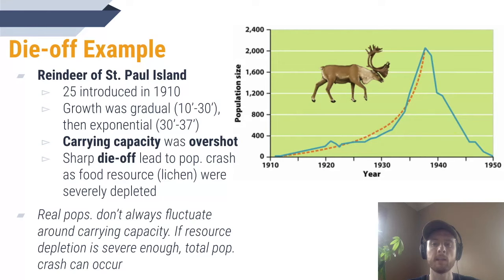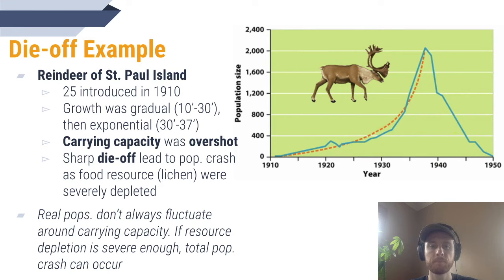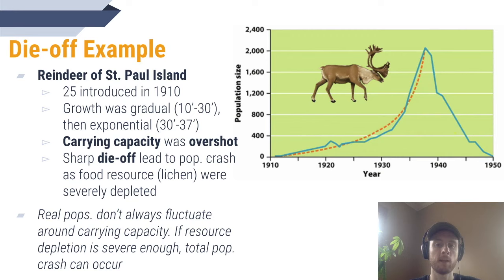What this led to was the reindeer heavily overgrazing that important winter food source of lichen. Since lichen take a long time to regrow, and some scientists estimate that the density of the reindeer population at its peak in 1938 was three times their usual maximum density, there was a severe population crash down to only eight individuals in 1950. However, reindeer proved to be more of a generalist species than previously thought. When they exhausted the supply of lichen, the reindeer of St. Paul Island adapted to eat and dig up grasses during the winter. This allowed them to survive, and their population has gradually recovered to a size of about 400 today.